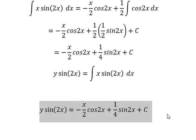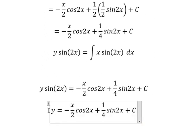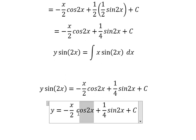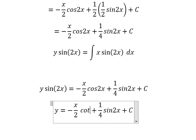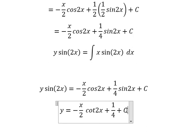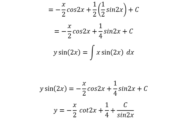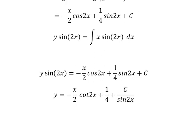Next, we divide both sides by sine 2x. We go inside sine 2x, and these terms simplify. We have 1 over sine 2x. This is the final answer. Thank you for watching. See you next time.